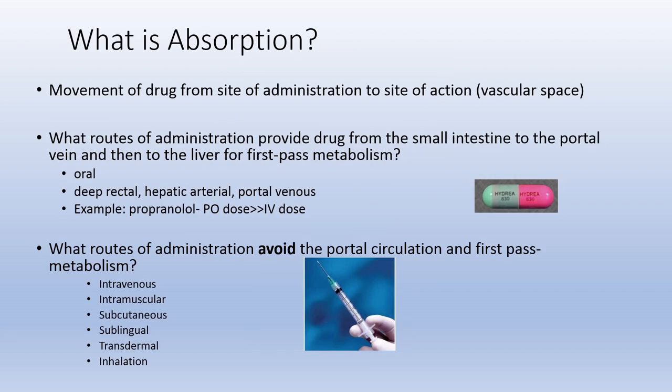What is absorption? Absorption is the movement of drug from the site of administration to the site of action in the vascular space. What routes of administration provide drug from the small intestine to the portal vein and then to the liver for first-pass metabolism? Those routes are oral, deep rectal administration, hepatic arterial, and portal venous. One example would be propranolol. For drugs that undergo extensive first-pass metabolism, there's a large discrepancy between the oral dose and the IV dose. Routes that avoid the portal circulation include intravenous, subcutaneous, sublingual, transdermal, and inhalation pathways.